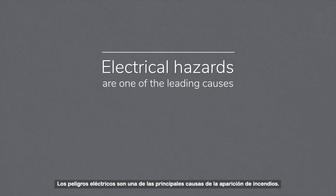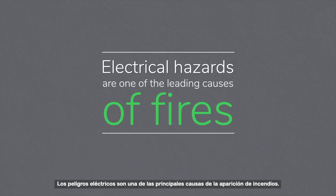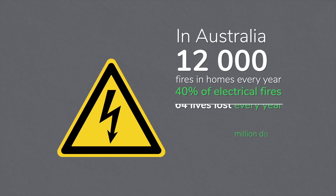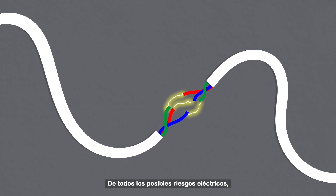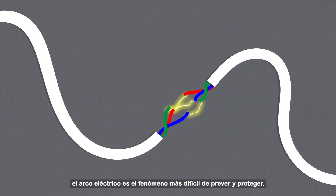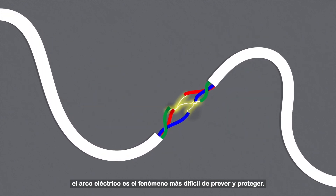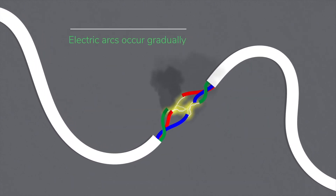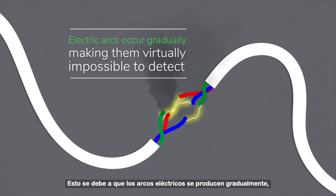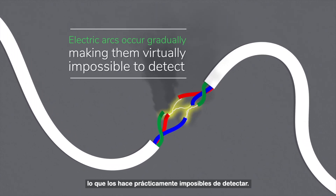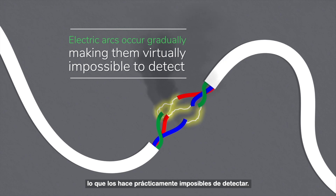Electrical hazards are one of the leading causes of fires. Of all potential electrical hazards, electric arcs are the most difficult to protect against. This is because electric arcs occur gradually, making them virtually impossible to detect.